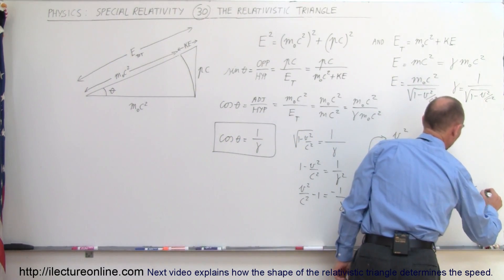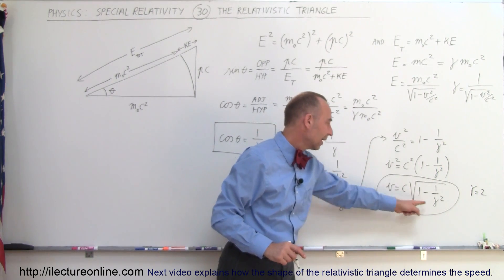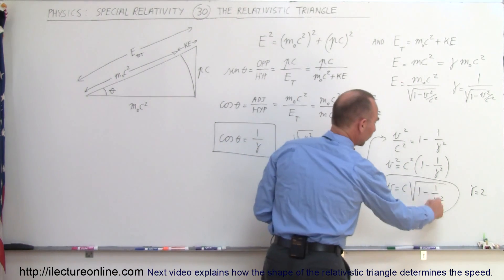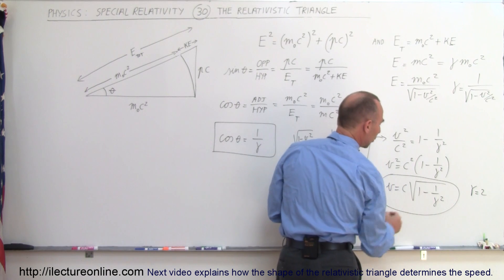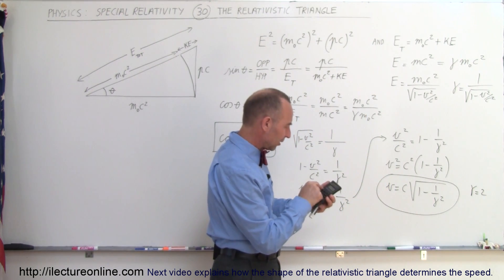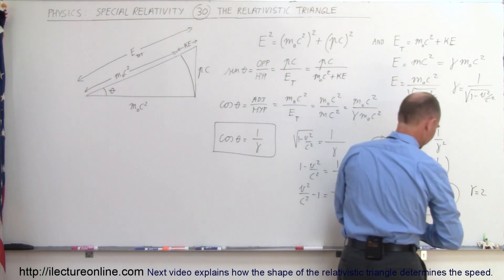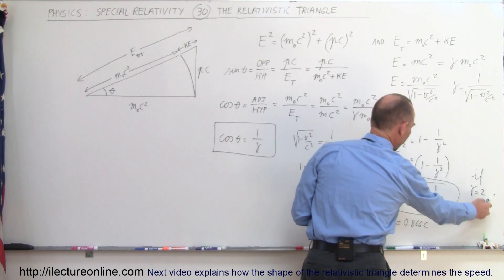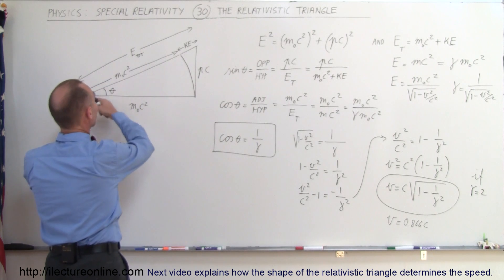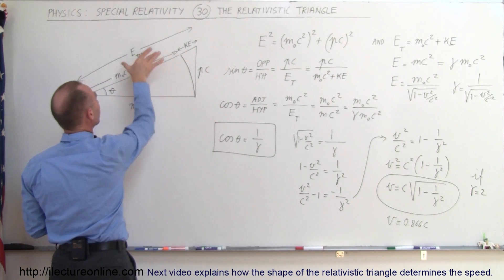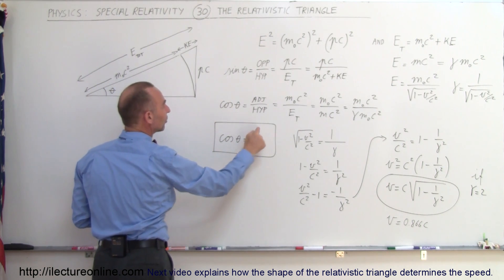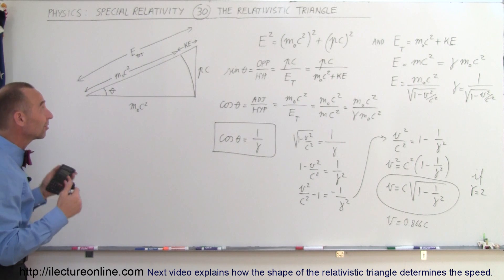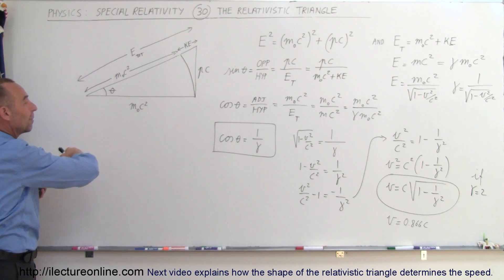For example, let's say gamma equals 2. Plugging in: 1 over 2 squared is 1 over 4; 1 minus 1 over 4 is 3 quarters; the square root of 0.75 gives approximately 0.866. So if gamma equals 2, then V equals 0.866 times C. Once you have the triangle relating momentum, rest mass, and total energy, you take the cosine of the angle — that equals 1 over gamma — and from gamma you can find the velocity very easily.